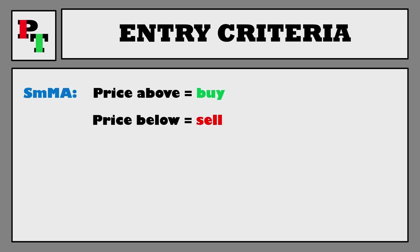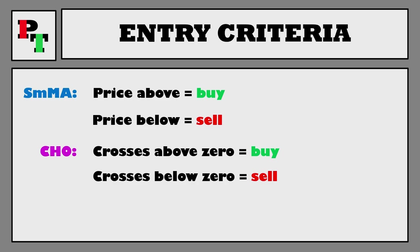Let's confirm our entry criteria for the strategy. First, for our filter — the smooth moving average — when price is above the average we'll be looking for buy trades only, and when price is below the average it will be sell trades only from the Chaikin. Prices above the average signals an uptrend and below signals a downtrend. When we get a crossover above the zero line on the Chaikin, we'll use that as a buy signal, and when it crosses below the zero line, that'll be a sell signal.